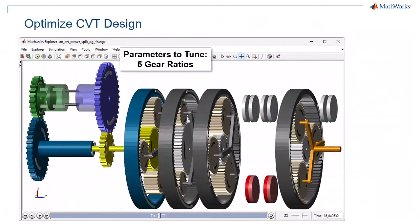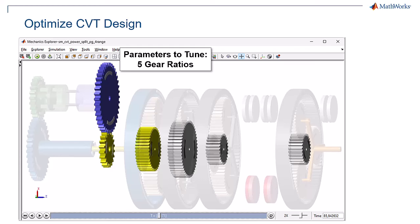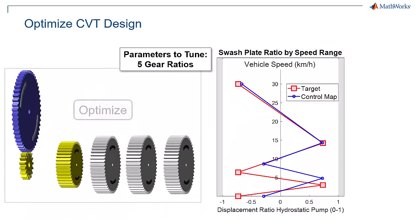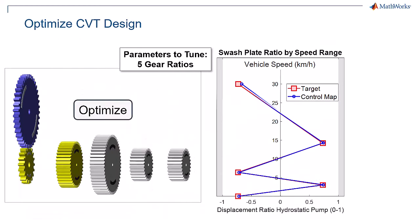Using MATLAB, you can optimize the gear ratios in the power split CVT to achieve the target speed ranges.